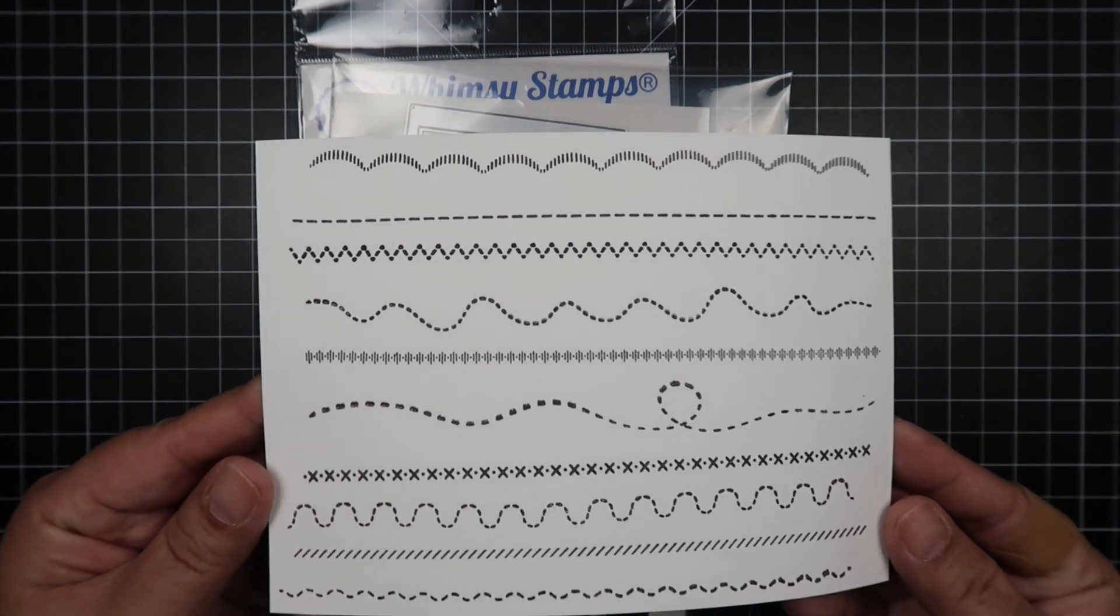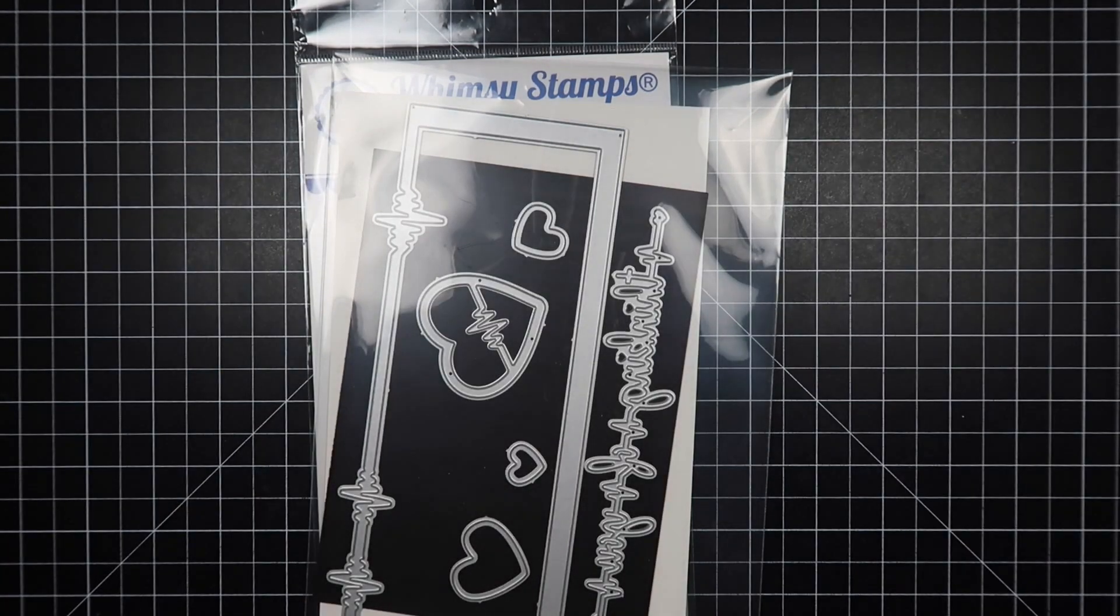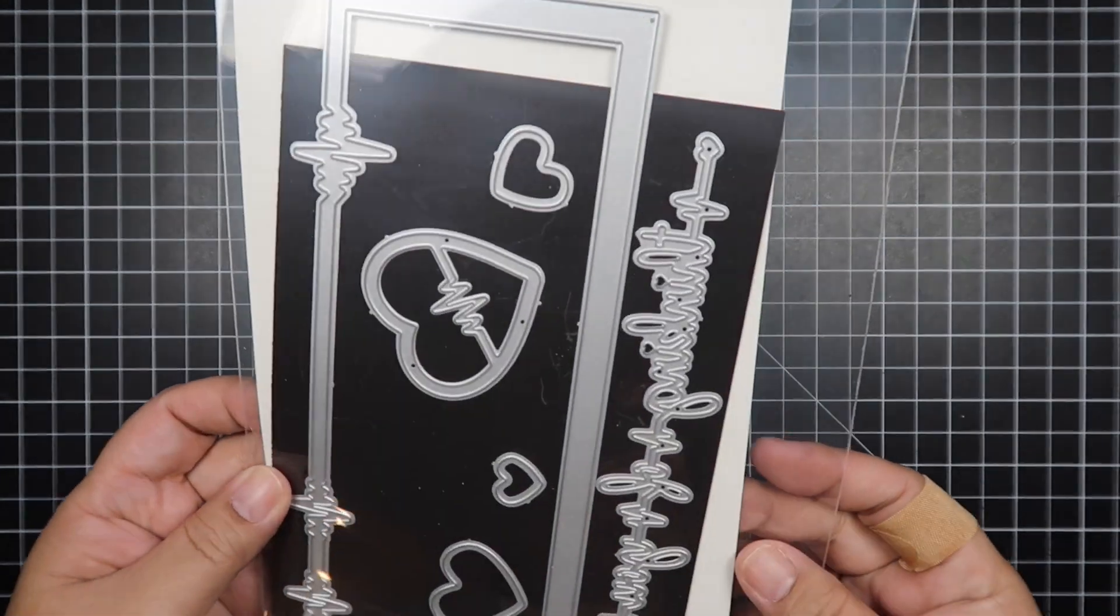It comes with 10 unique borders and each one is unique. There's scalloped lines, a stitch border, a wavy border, and so much more.